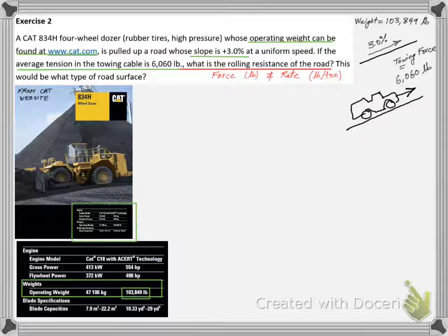We are interested in the rolling resistance rate in pounds per ton, but we need to calculate first the absolute rolling resistance force.